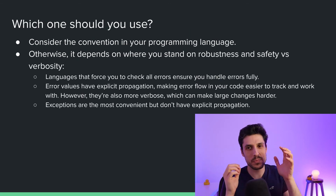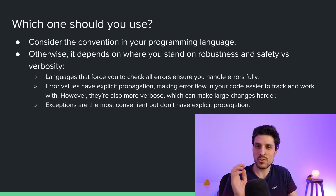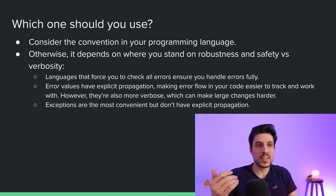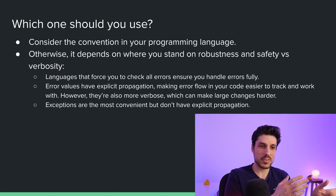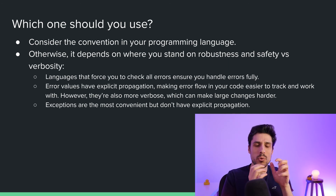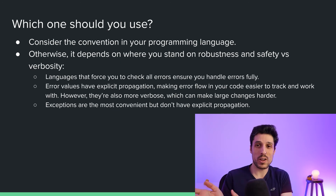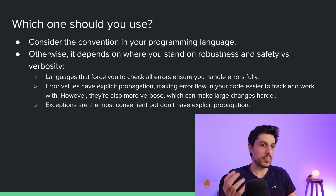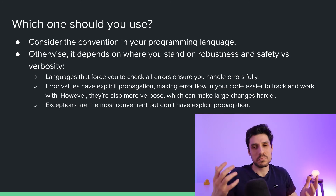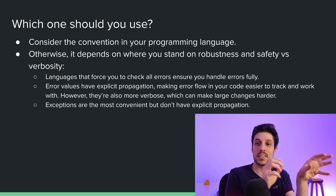All right, so that was a bit about the similarities and differences, but which ones should you choose? One important consideration is what is the common one to use in your programming language of choice. For example, languages like C# and Java, and even JavaScript, are pretty heavily based on exceptions, whereas some other languages are pretty heavily based on error values. That doesn't mean you need to follow that, but it's one reason to consider if you care about what other developers would be used to.